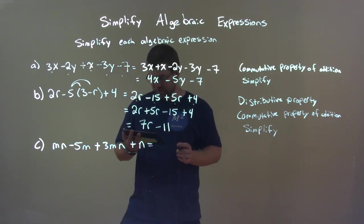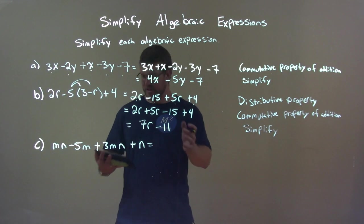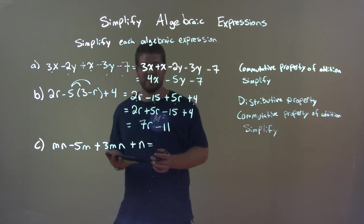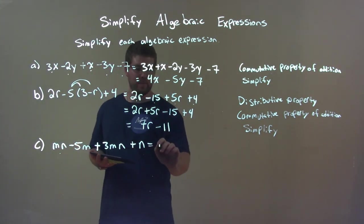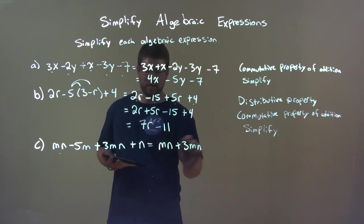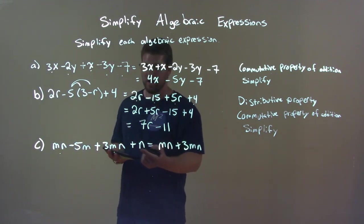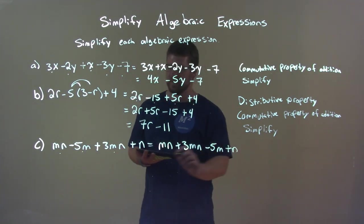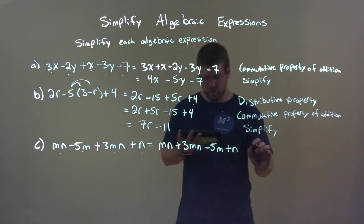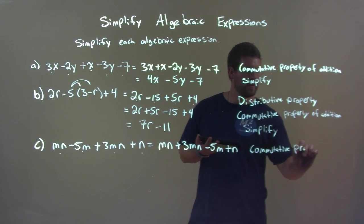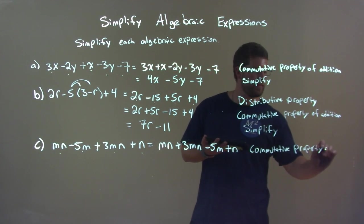Okay? Okay. So what I want to do first, okay, is I'm going to rearrange this stuff. Okay? So now we're going to rearrange and put our like terms together. So I see we have an mn here. So I'm going to put an mn. Then we have a 3mn. That's another like term. Now we're going to put our m's next. So we have just a minus 5m and then plus an n. That's all of them. And this was the commutative property. Commutative property of addition.